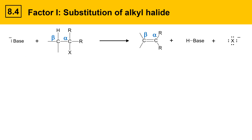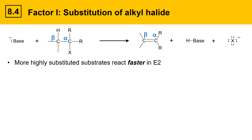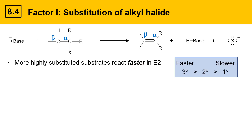The substitution of the alkyl halide influences the rate of the E2 reaction. More highly substituted substrates react faster in E2. Tertiary alkyl halides react faster than secondary, and secondary react faster than primary. Primary are the slowest, tertiary the fastest.